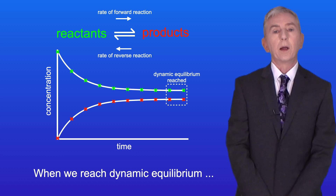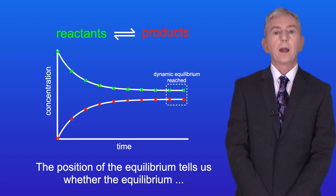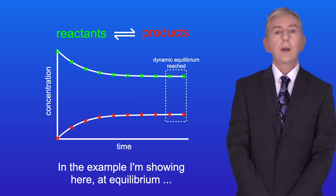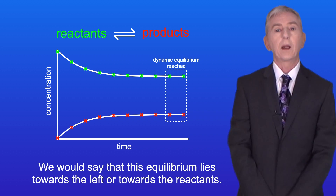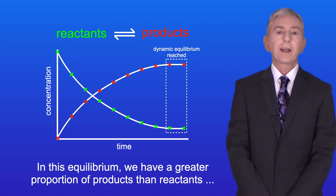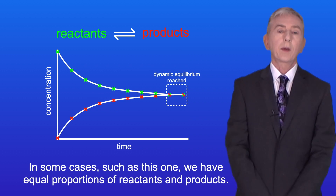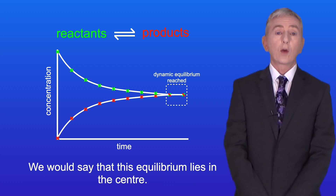When we reach dynamic equilibrium the concentration of the reactants and products stop changing. The position of the equilibrium tells us whether the equilibrium lies towards the reactants or towards the products. In the first example, at equilibrium we've got a greater proportion of reactants than products, so we would say that this equilibrium lies towards the left or towards the reactants. In the second example we have a greater proportion of products than reactants, so we'd say that this equilibrium lies towards the right or towards the products. In some cases we have equal proportions of reactants and products — we would say that this equilibrium lies in the centre.